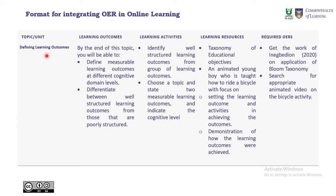What is the learning outcome for this topic — defining learning outcomes? By the end of this topic, you will be able to: define measurable learning outcomes at different cognitive domain levels, and differentiate between well-structured learning outcomes and those that are poorly structured. This is the target — this is what you want the student to be able to do at the end of this particular learning segment on defining learning outcomes.